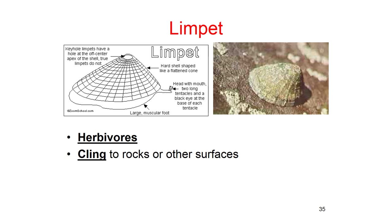A limpet is classified as a gastropod because it only has one shell. If you look at the drawing, you can see their tiny little head. They just have a differently shaped shell, but they do only have one shell. They are generally herbivores, they cling to rocks and other surfaces, and they have a large muscular foot.